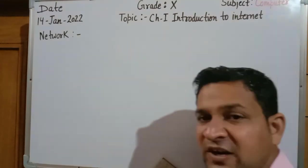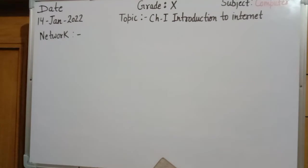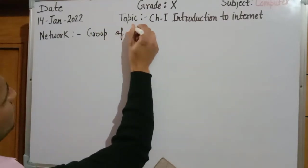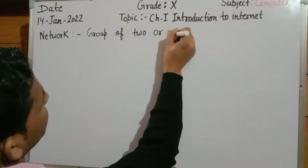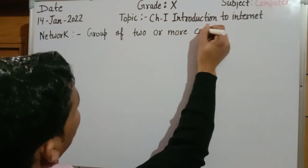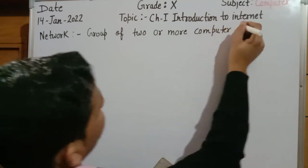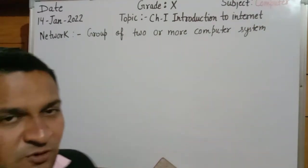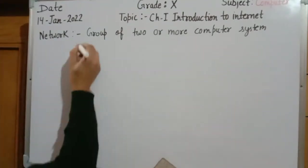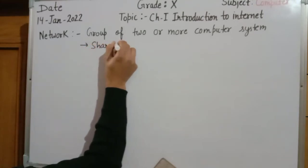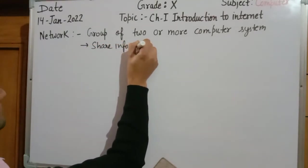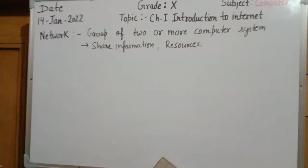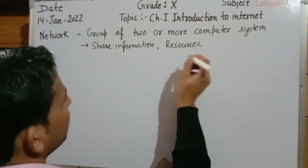What do you mean by network? Basically, a network is a combination or group of two or more computer systems. When they work together, it becomes a network. A network is a combination of two or more computer systems that are connected with each other. The purpose of connection is to share information and resources.